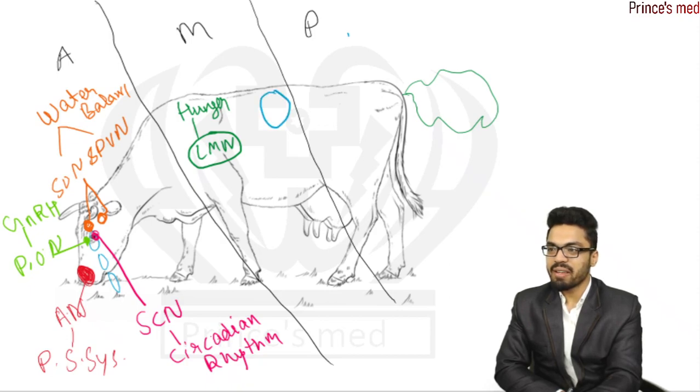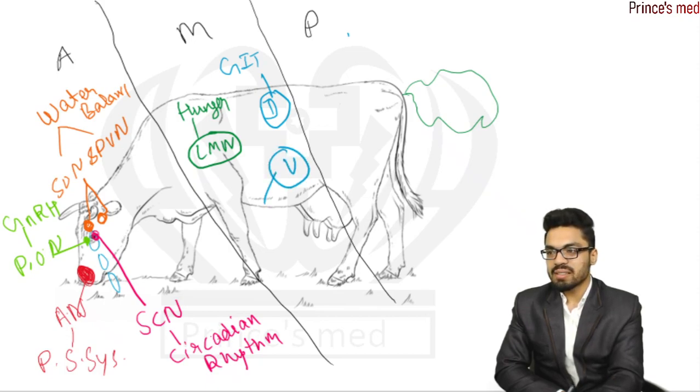Then we have dorsal nucleus and function is GIT stimulation, gastrointestinal tract stimulation. And here we have ventral nucleus and function is satiety of hunger.